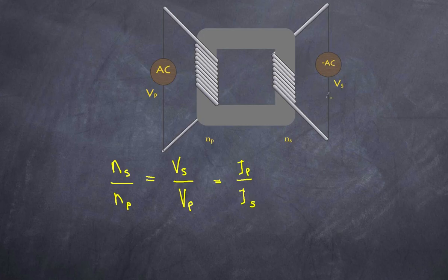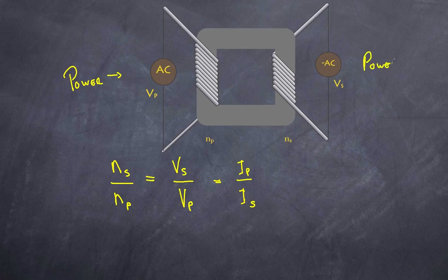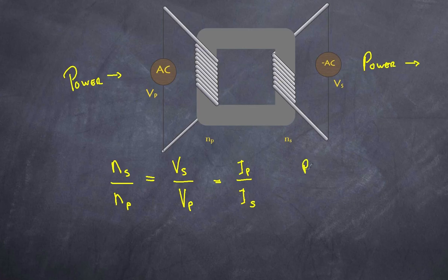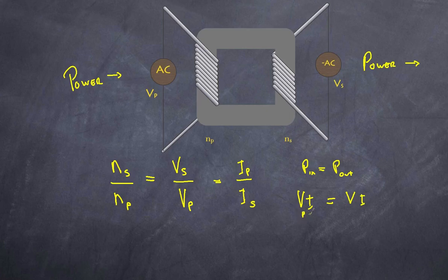The current in the secondary will increase if the voltage is decreased, and here's why: if a certain amount of power goes into the transformer, the power out must be the same — it cannot be greater, as that would violate conservation of energy. Power is voltage multiplied by current. So if the primary voltage is reduced to a lower secondary voltage, the current must increase in the secondary to maintain equal power.